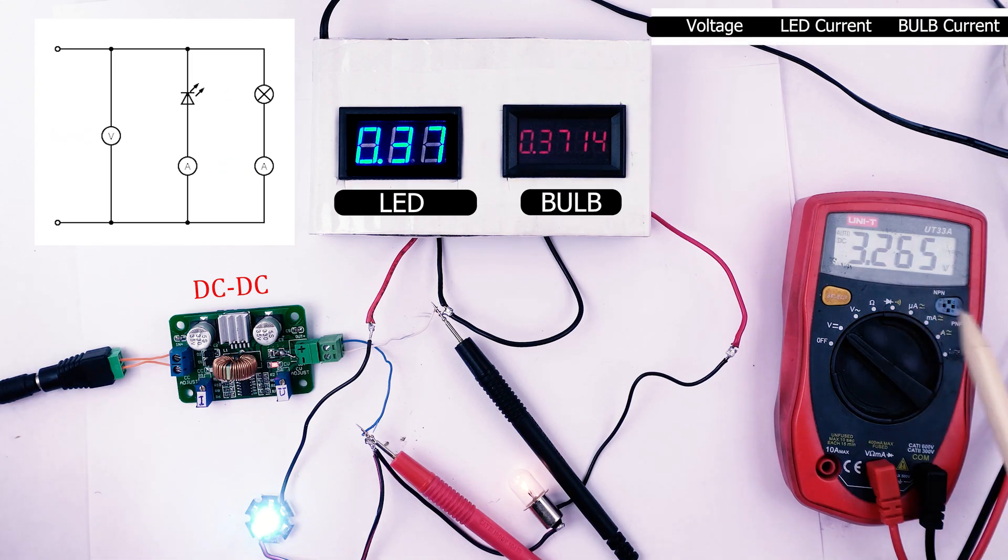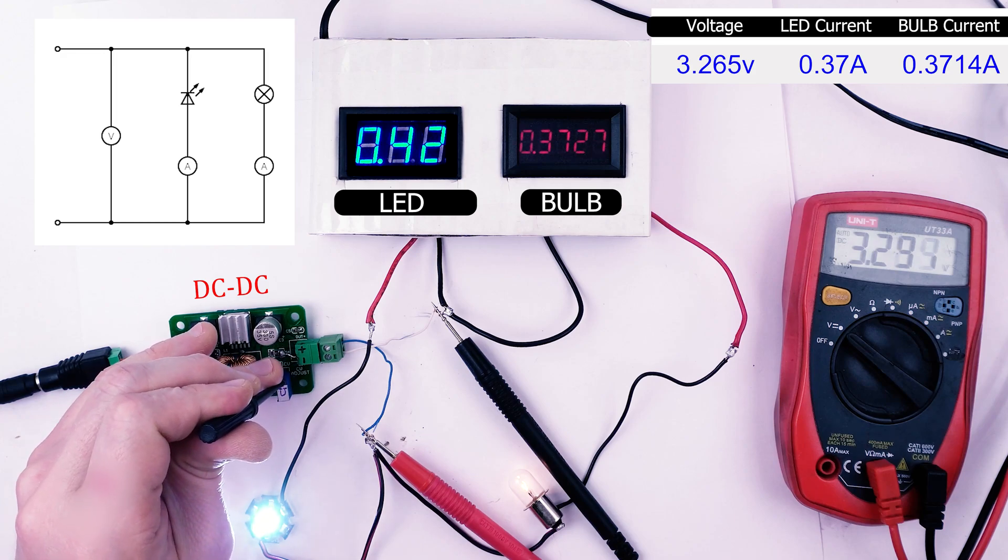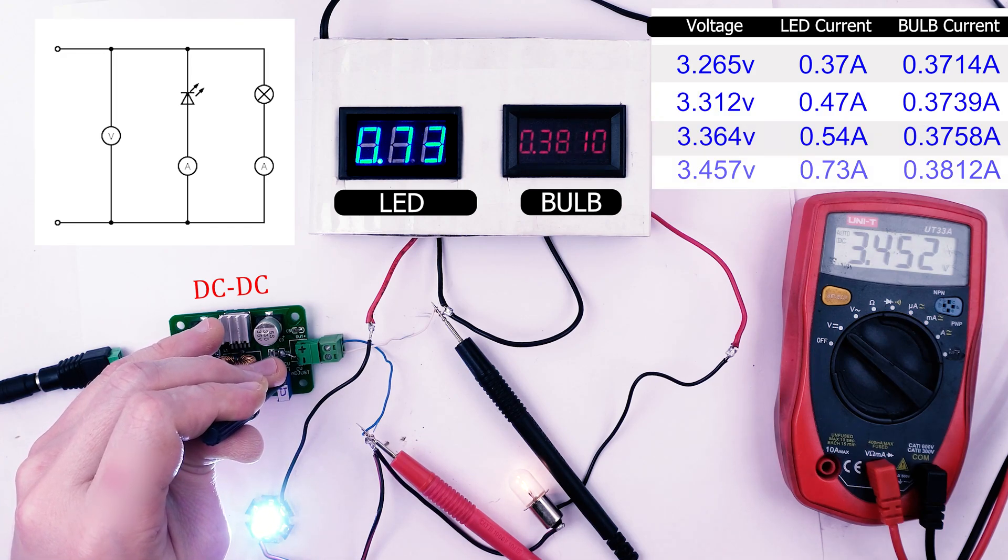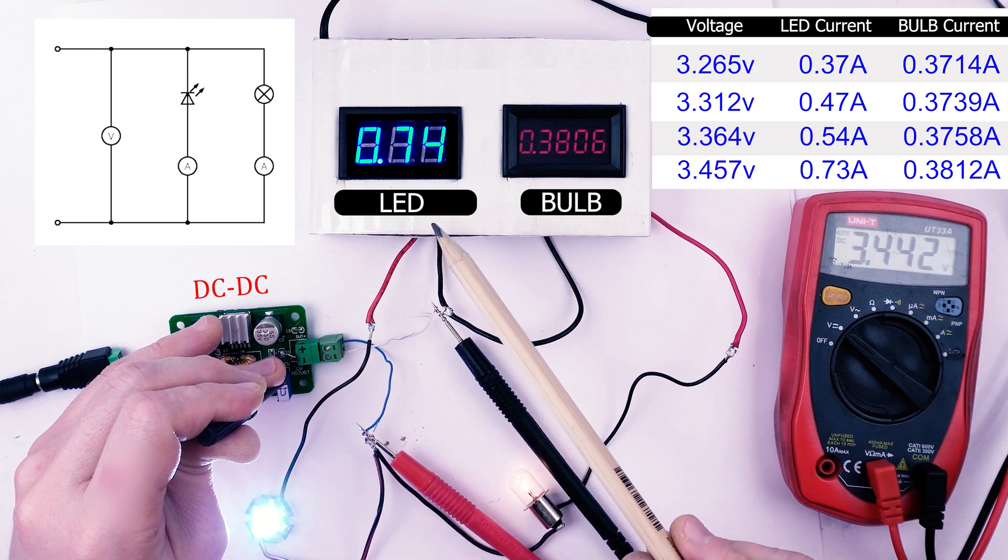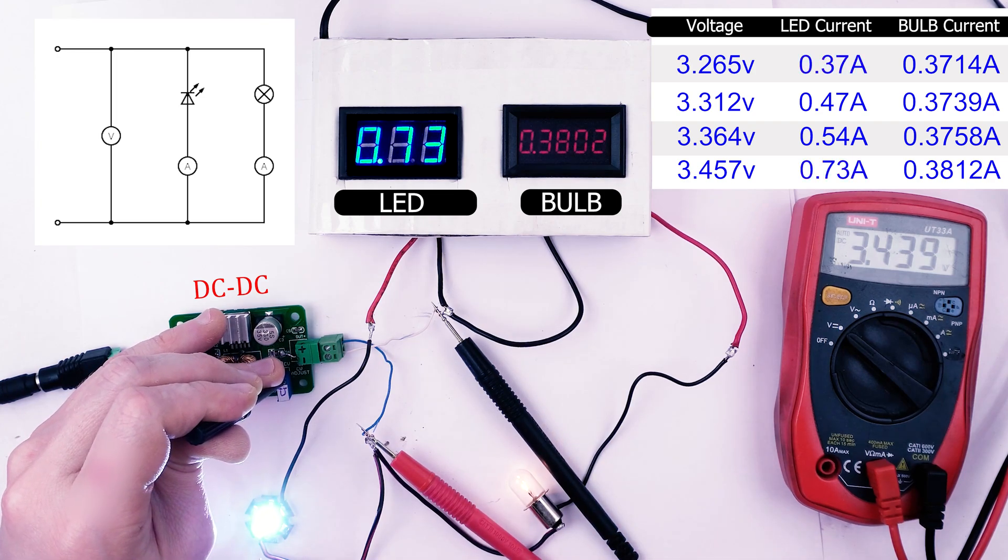Now I'll slowly increase the voltage. Let's see what happens. At 3.45V the LED current has almost doubled, affecting its brightness.